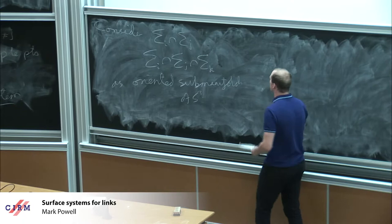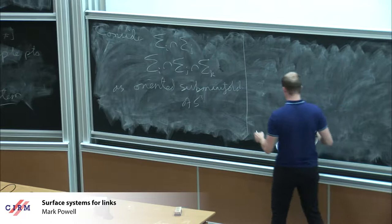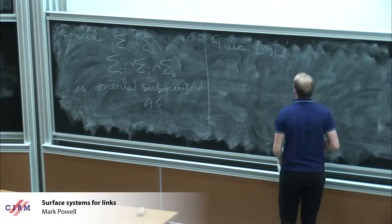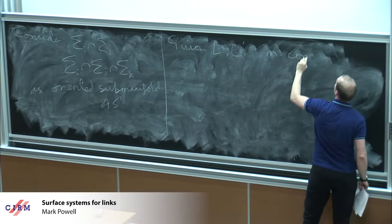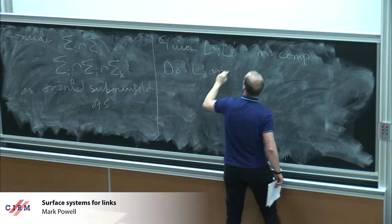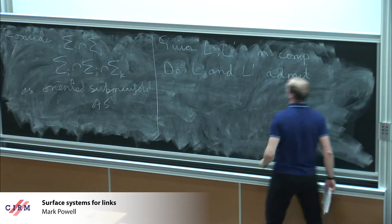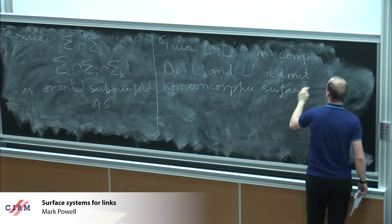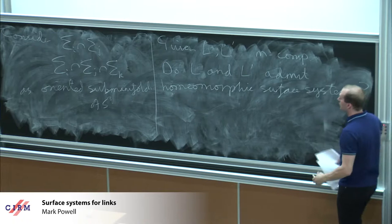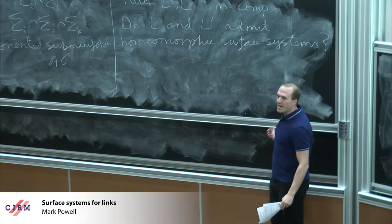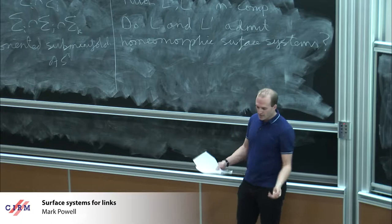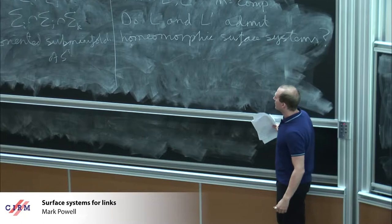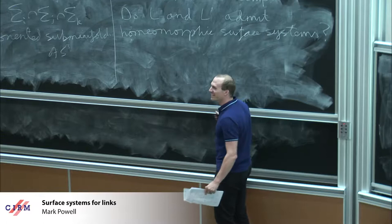The question I'm interested in is: given two links, both m-component, do they admit homeomorphic surface systems? That's a geometric question you might be interested in. If you can answer this question with some readily computable algebraic invariant, then you're happy. In this case the enemy's name is Chris Davis — and he's also his own worst enemy, as you'll see, because he helped answer the question.